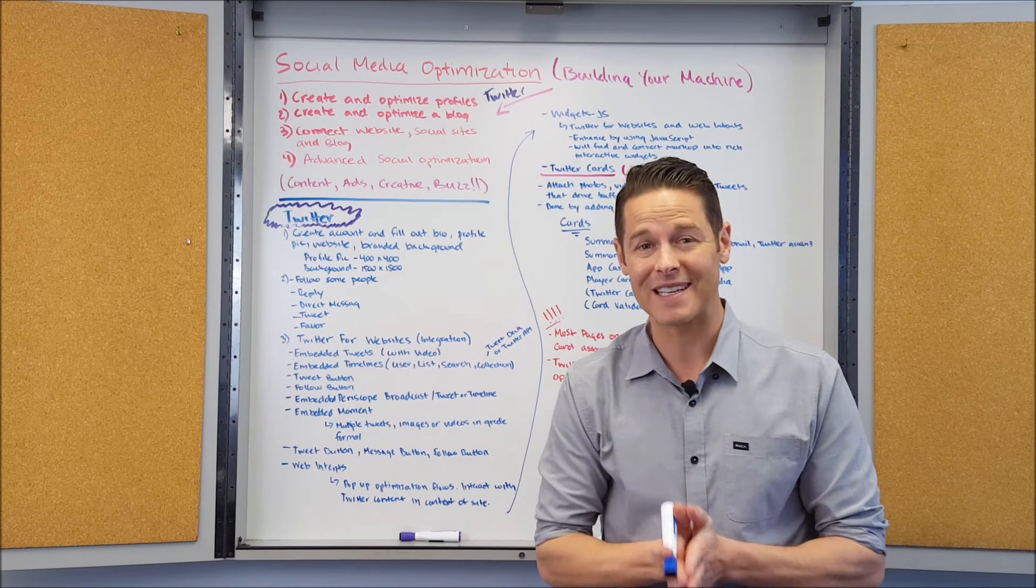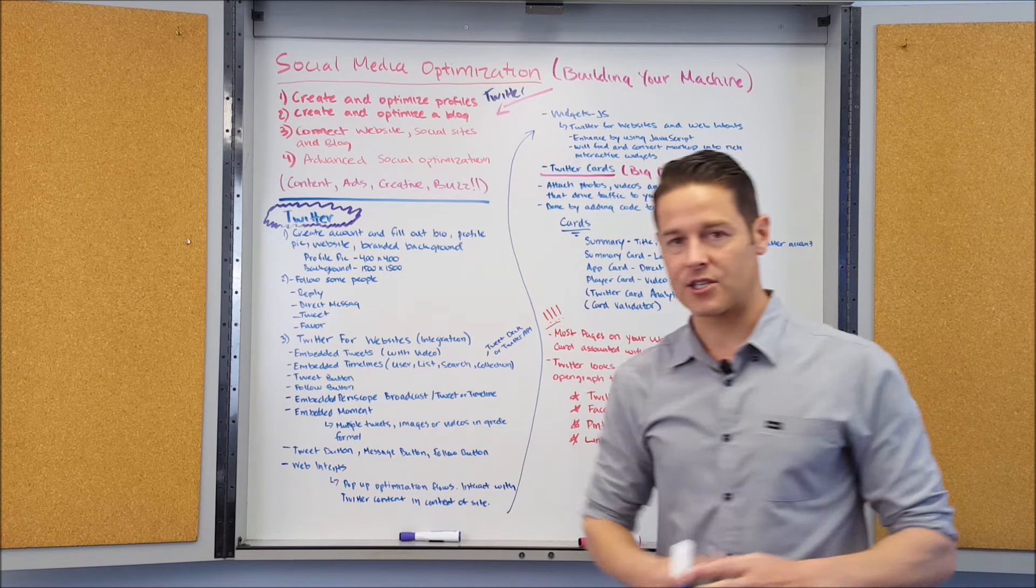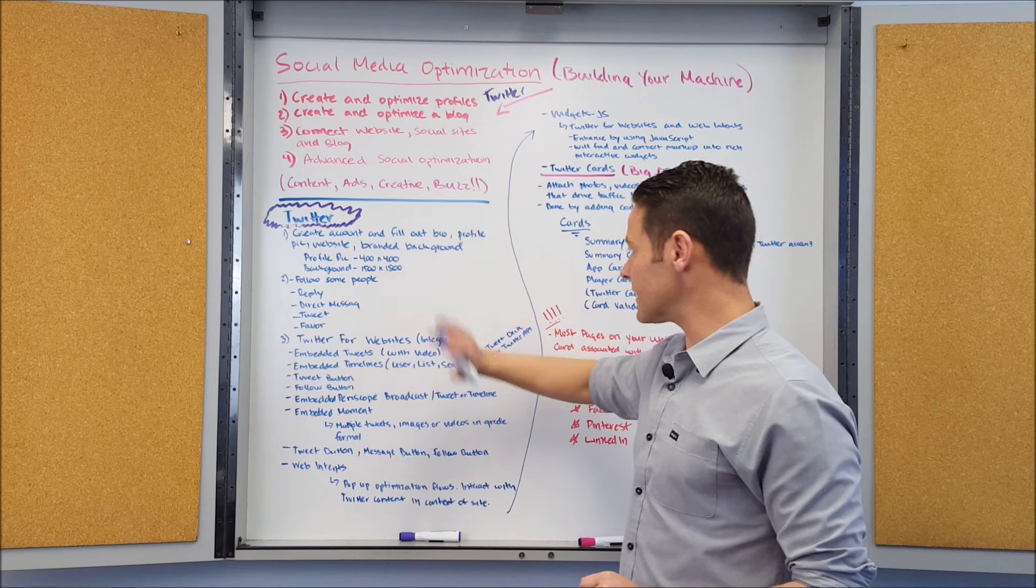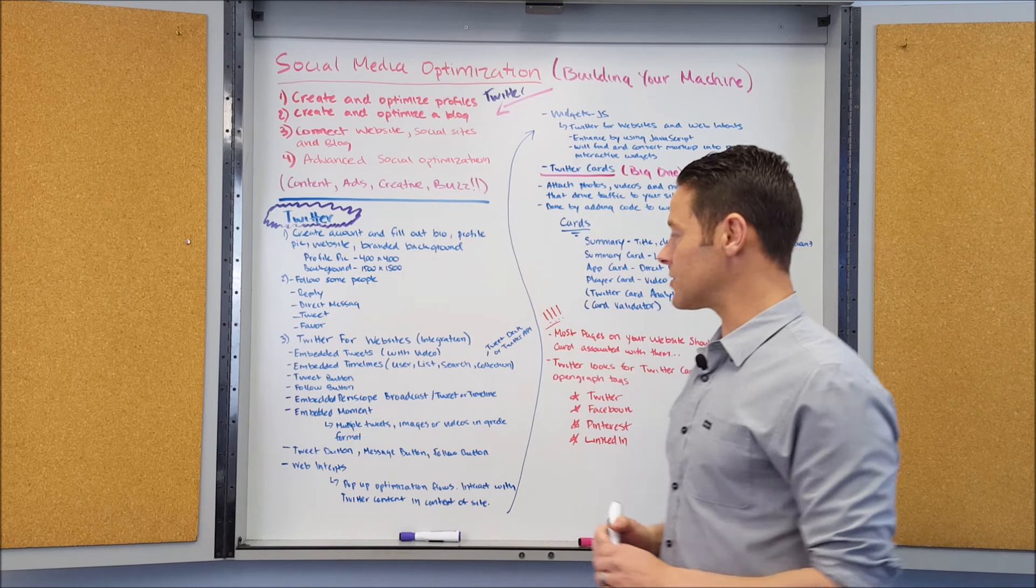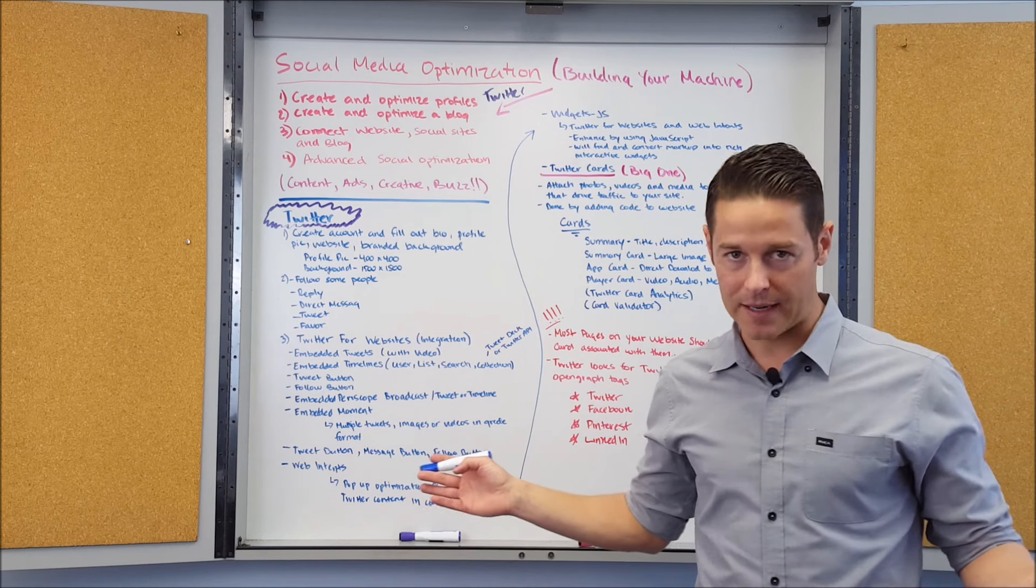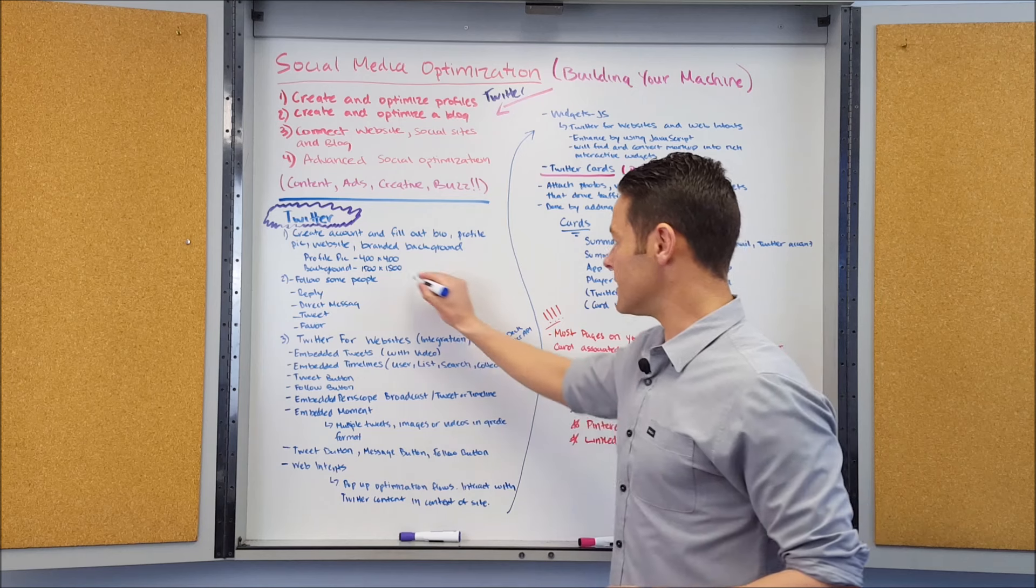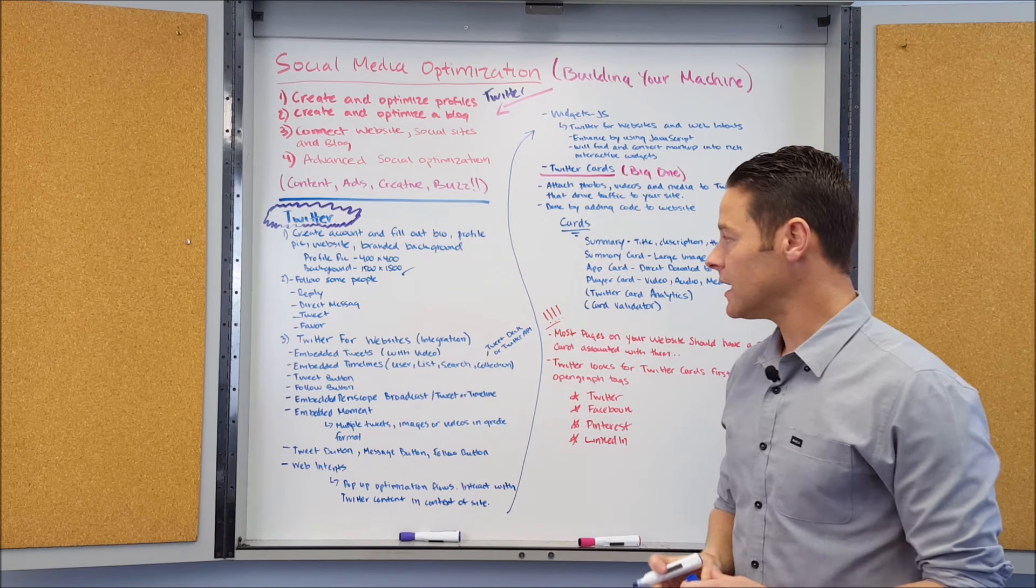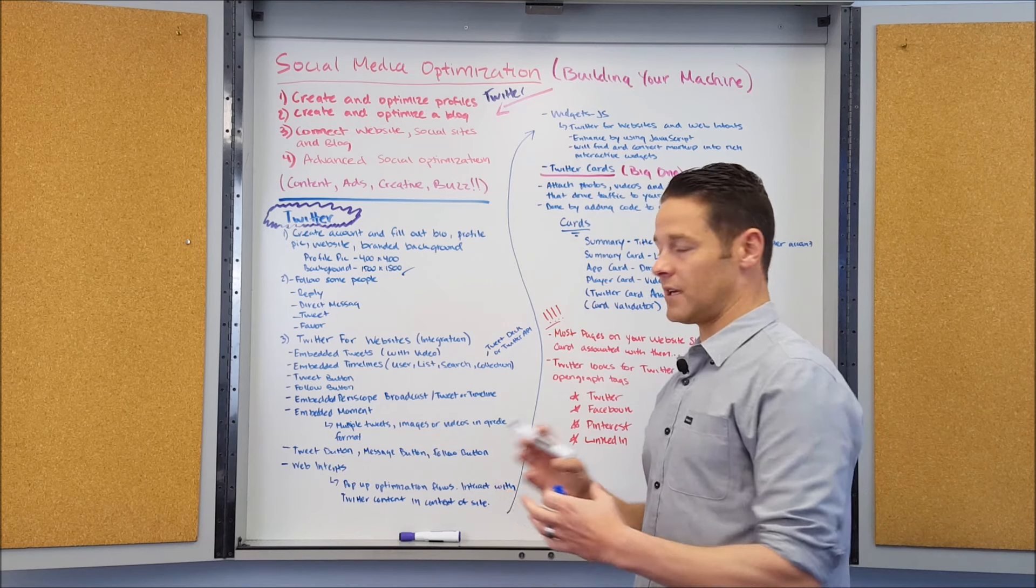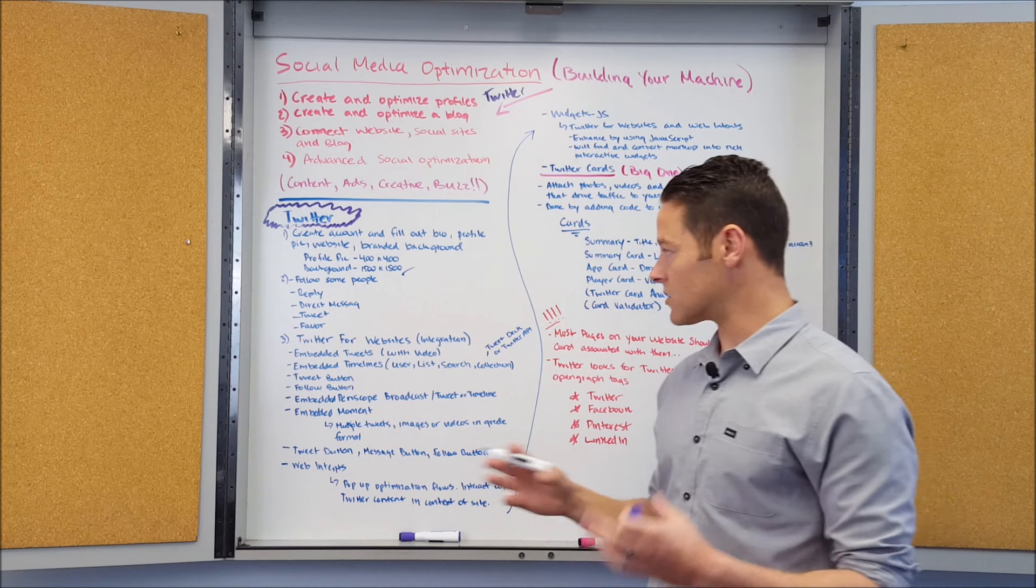With Twitter, when you're just getting started, basic stuff: you're going to want to create an account, fill it out, put your bio information in there, a picture, link to your website, and make sure that you have a branded background. Your profile picture is 400 by 400, your background is 1500 by 1500. Generally you're going to want to start by following some people, make sure you know what an at reply is, how to use the direct messages, tweet, and favorite things.